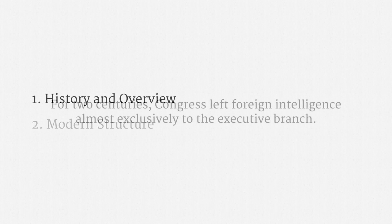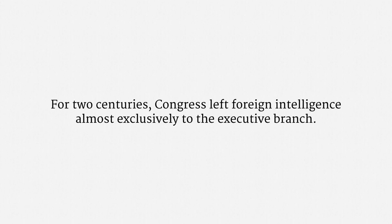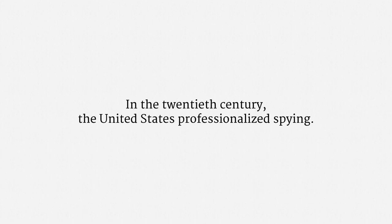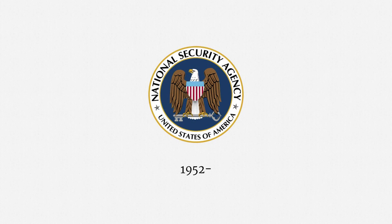For about two centuries, Congress left foreign intelligence almost exclusively to the executive branch. Early spying was fairly ad hoc and related primarily to foreign affairs and military concerns. In the 20th century, the United States professionalized spying. Efforts were initially concentrated in the uniformed services, but by mid-century an entire intelligence field was taking form. In 1952, President Truman established the National Security Agency within the Department of Defense.